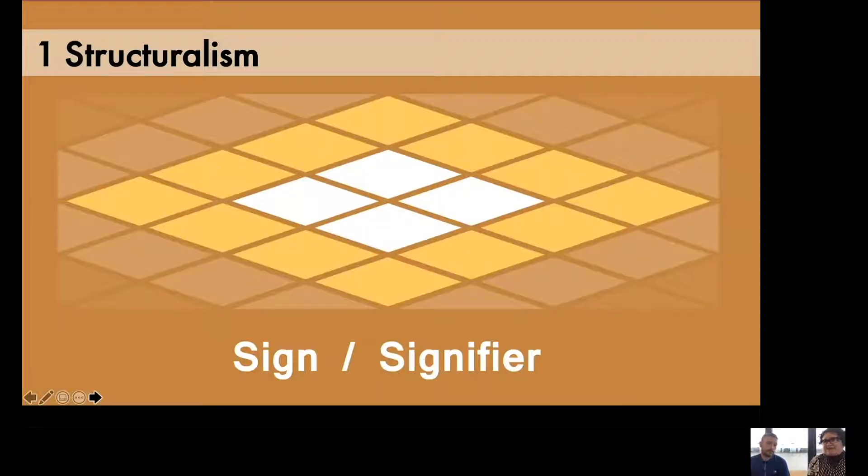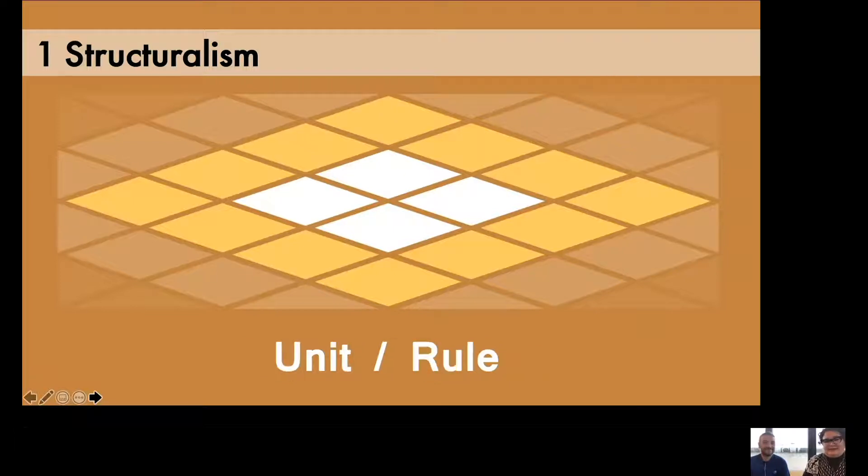So if you're going to remember two words for the whole thing, remember sign and signifier. But that means in reality, it means unit and rule. For example, one of these rhombos or figures here is the unit and the rule is how it relates to the others.